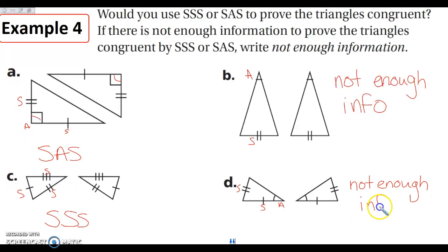This is the one that's not nice if you spell it backwards — notice it reads the same forwards and backwards, and the other way is not acceptable. That's how you know it's not a valid way to show triangles are congruent. If you have any questions, go ahead and write it down, and we will talk about it in class. I hope you all have a wonderful day and I will see you later.